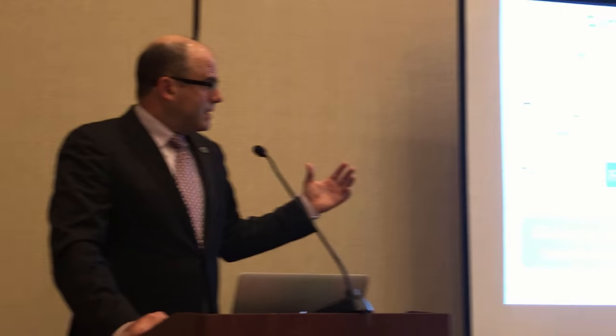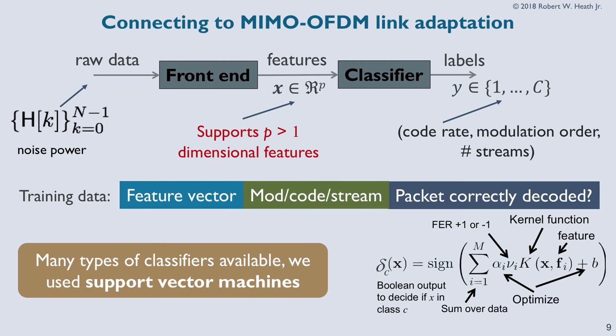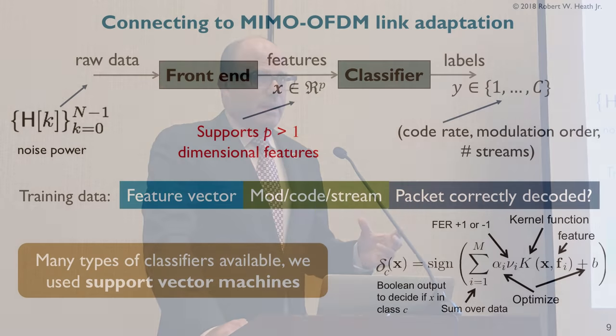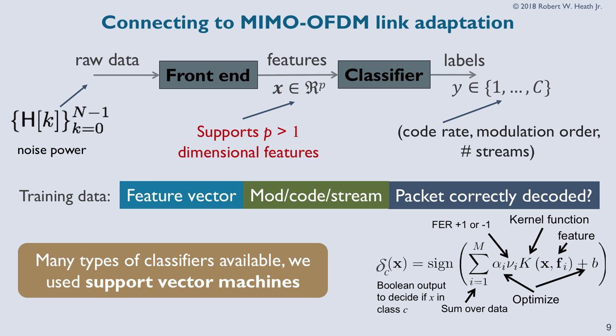The training data consists of the processed channel information that becomes our feature vector, the coding, modulation, and number of streams used, and whether that packet was decoded correctly or not. The nice thing is that in wireless LAN in particular, you append a CRC to all packets, so you get for free information about whether the packet was decoded correctly. This data is easily measured in a wireless system. The classifiers we used were nearest neighbors and later support vector machines.